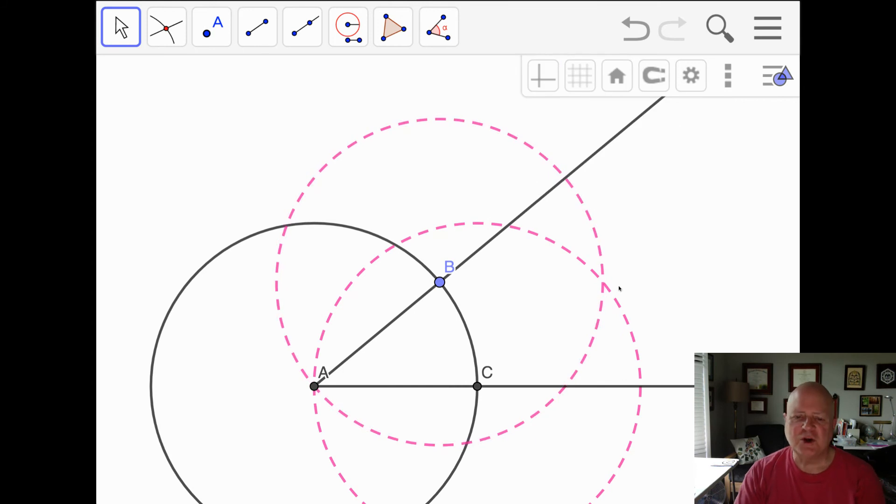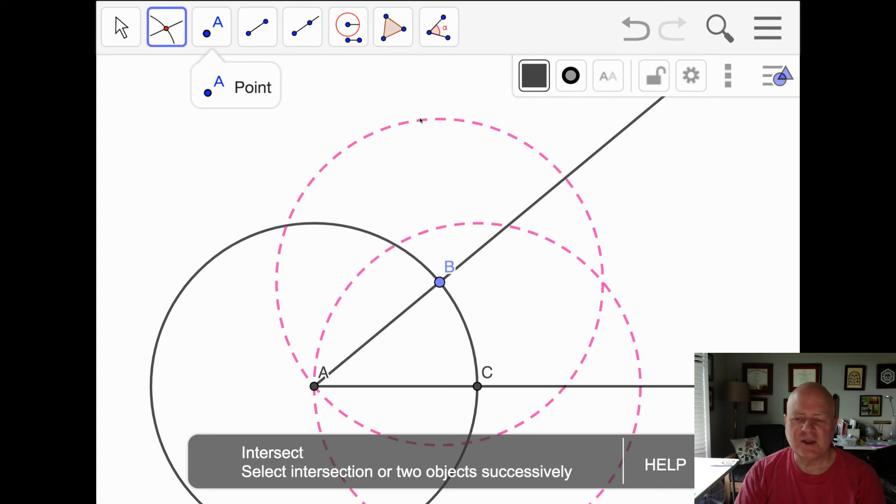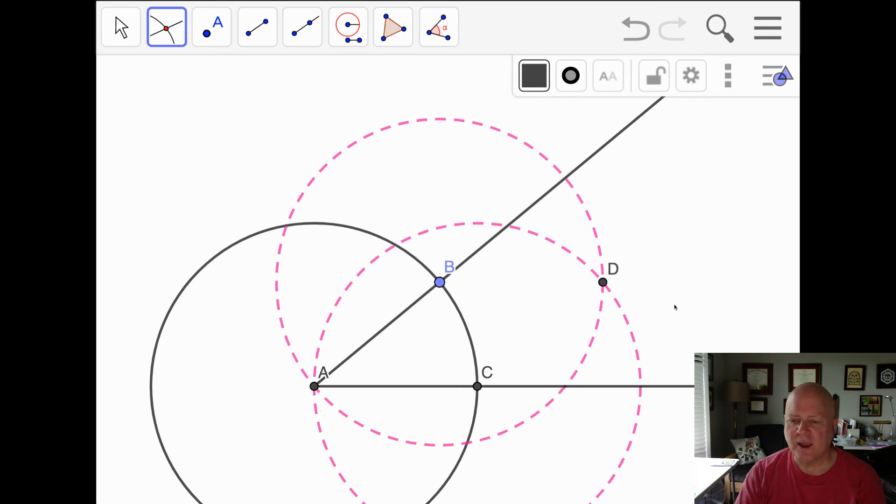Where these two circles that I've drawn intersect is a point, and we'll call that point D. So they intersect at A and at D.